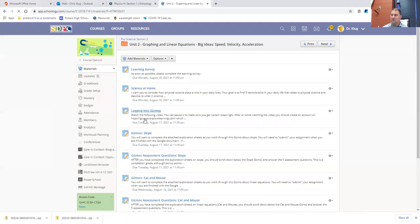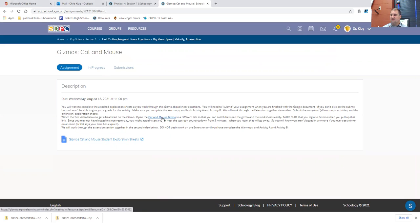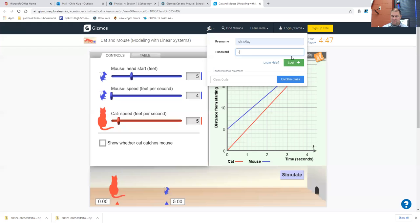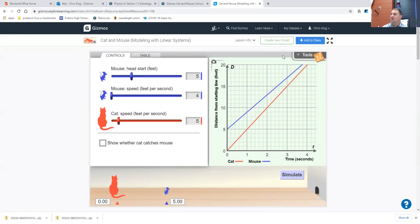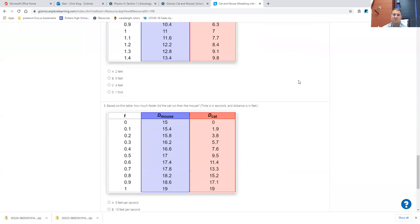In this same folder, notice that yesterday we did this gizmo on slope, and you answered the assessment questions after the gizmo. You want to do the same thing today, but with this cat and mouse gizmo. If you have not logged into gizmos since yesterday, then when you open the cat and mouse gizmo in a new tab, you're going to see a timer come up. That timer is because you're not logged in.